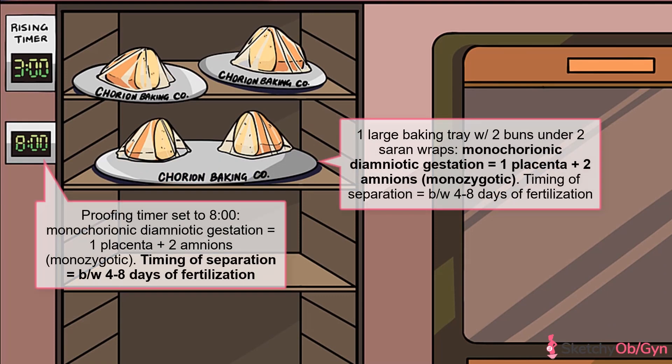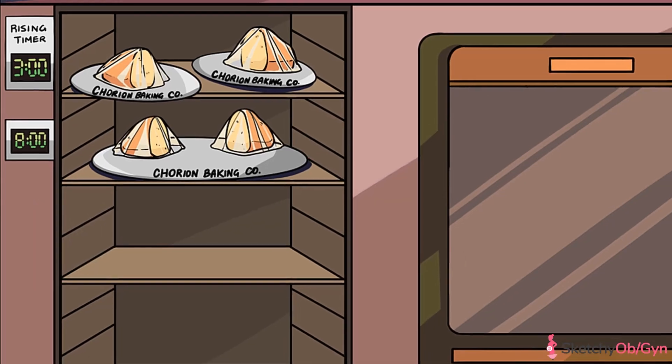Monochorionic-diamniotic pregnancies, also known as mono-di gestations, occur when division happens between four to eight days after fertilization, so this timer is set to eight hours. In this type of pregnancy, the fetuses share one large placenta, but they're each in their own amniotic sac — exactly how these buns are on the second shelf.